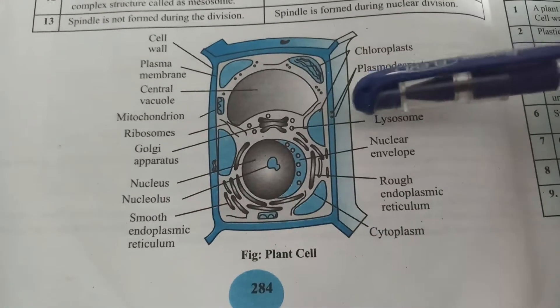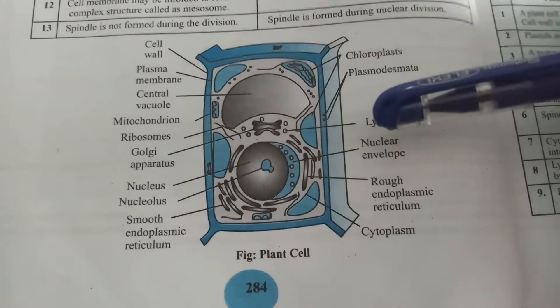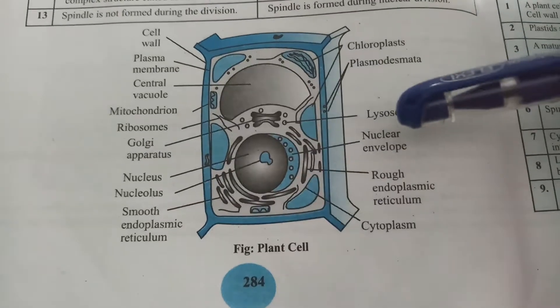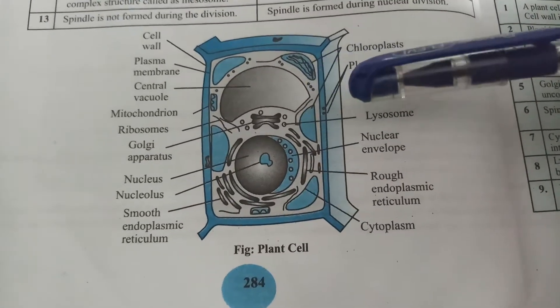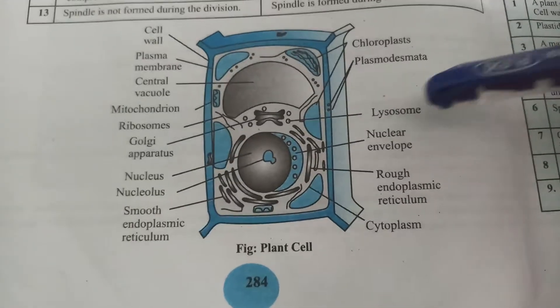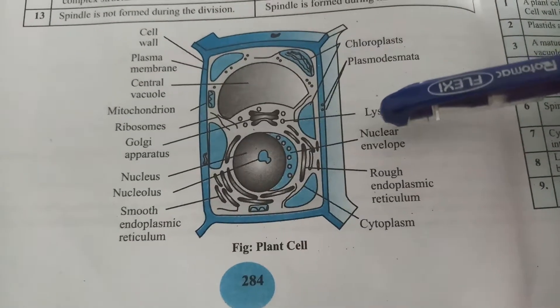Plasmodesmata are cytoplasmic connections between two cells that transport cell contents from one cell to the other. These form due to the failure of separation of the cell wall during cell division.